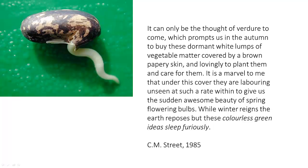In a 1985 competition to ascribe meaning to the sentence, C.M. Street came up with this beautiful bit of prose. It's amazing how our imaginations can be manipulated into finding meaning. 'It can only be the thought of verdure to come, which prompts us in the autumn to buy these dormant white lumps of vegetable matter, covered by a brown, papery skin, and lovingly to plant them and care for them. It is a marvel to me that under this cover they are laboring unseen at such a rate within, to give us the sudden awesome beauty of spring flowering bulbs. While winter rains, the earth reposes, but these colorless green ideas sleep furiously.'